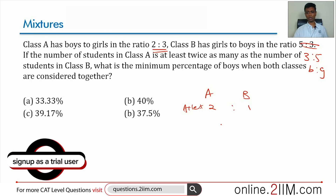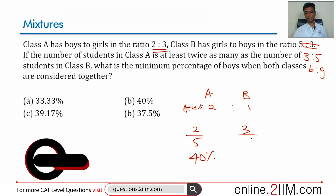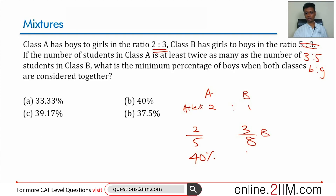The question asks: what is the minimum percentage of boys when both classes are considered together? Let's start by finding the percentage of boys in each class. Class A has 2/5 boys, which is 40%. Class B has 3/8 boys, which is 37.5%.